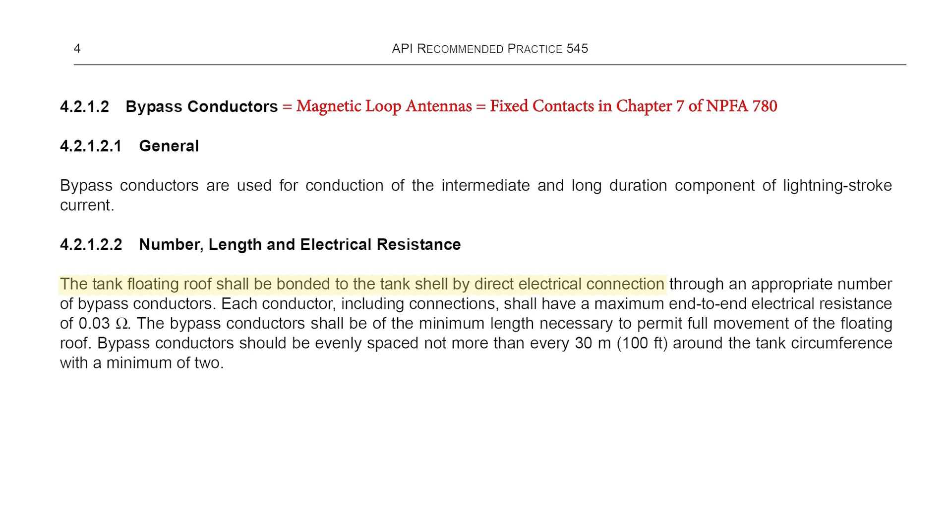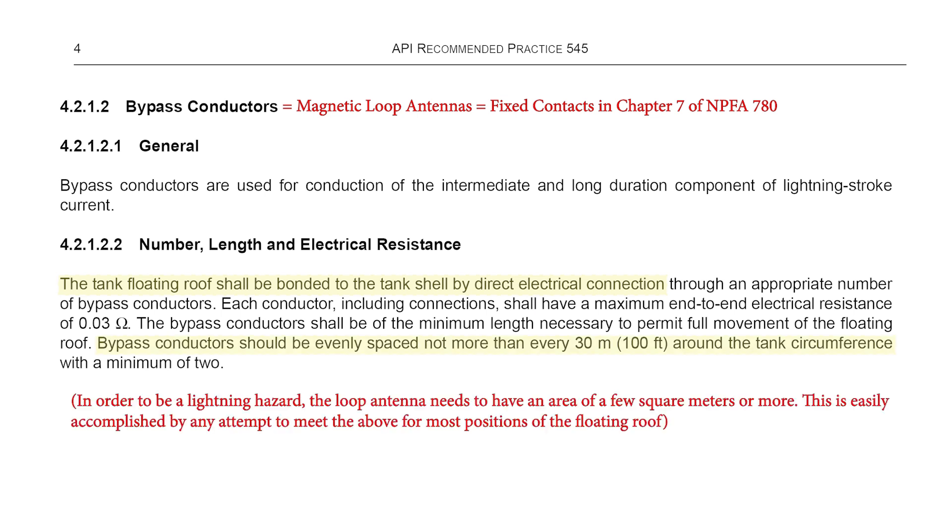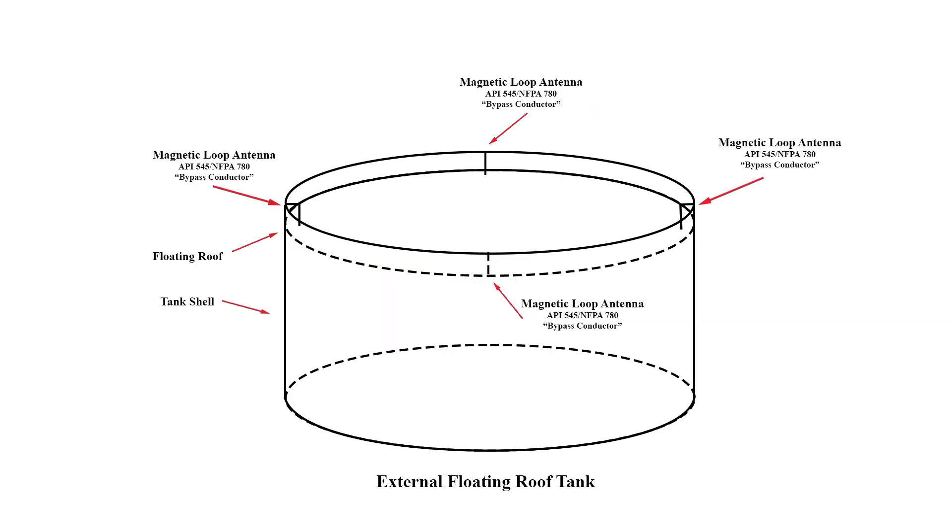They even recommend spacing them every 30 meters around the tank so that whether the tank is struck in the middle, on the edge, or if the strike is in the vicinity of the tank, all or a few of these bypass conductors will be well positioned to act as magnetic loop antennas.